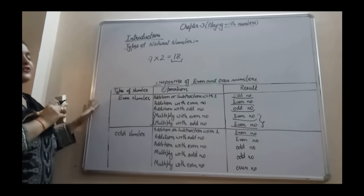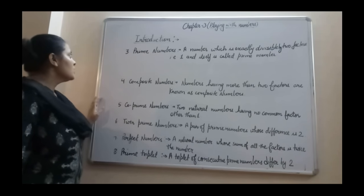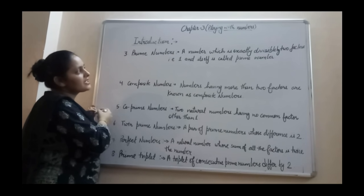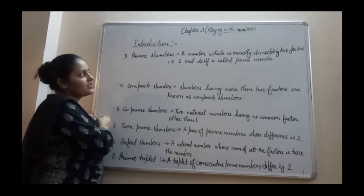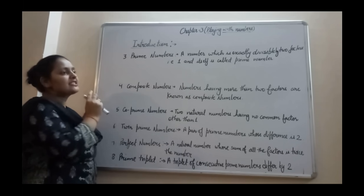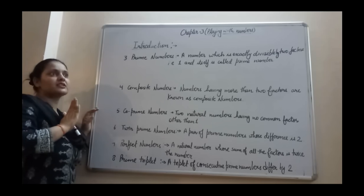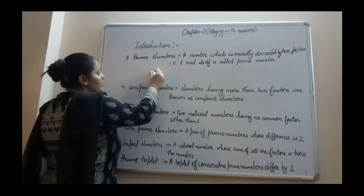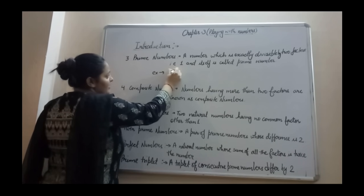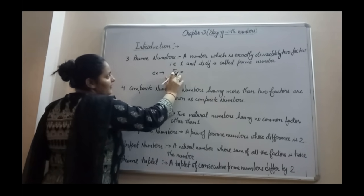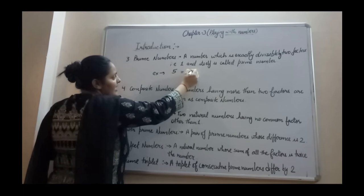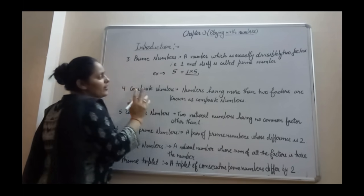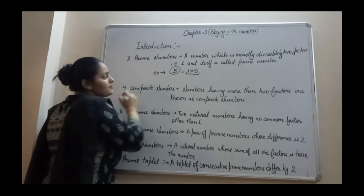Now let's move to another type of natural number: prime numbers. A prime number is a number which is exactly divisible by only two factors — that is 1 and the number itself. Prime numbers are those numbers having only two factors. For example, 5 is only divisible by 1 and 5. So 1 and 5 are the only two factors of 5, and 5 is a prime number.